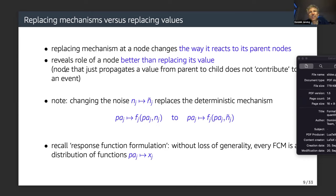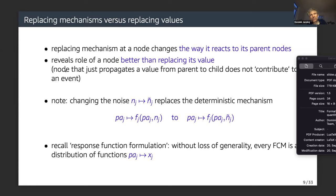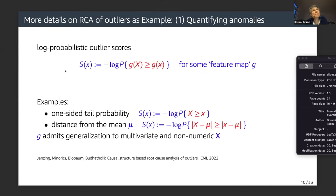You may be aware of the response function formulation, which phrases every FCM without loss of generality as a distribution over functions from the parents to the node — so every noise variable is, without loss of generality, function-valued. This interpretation is quite valuable because then the strict difference between whether the function changed or the noise changed disappears.